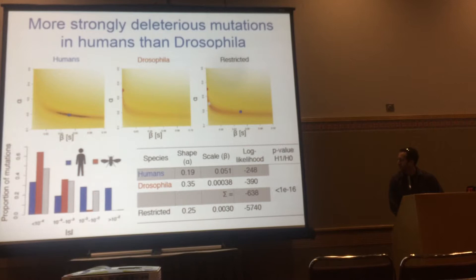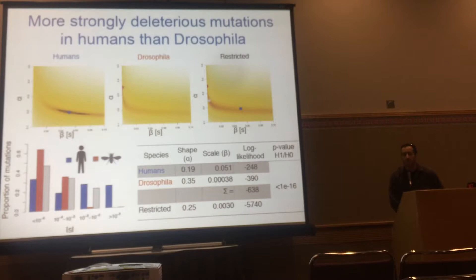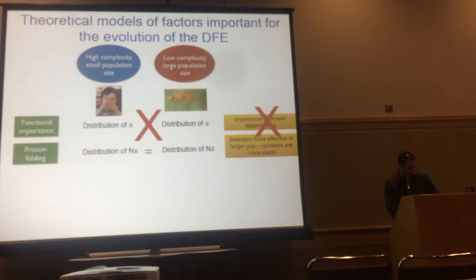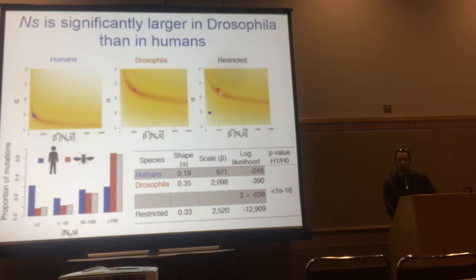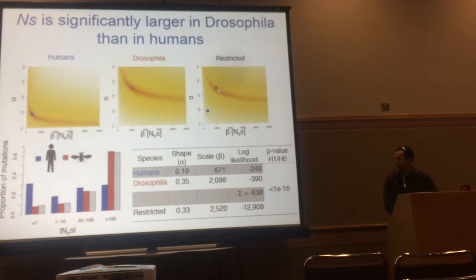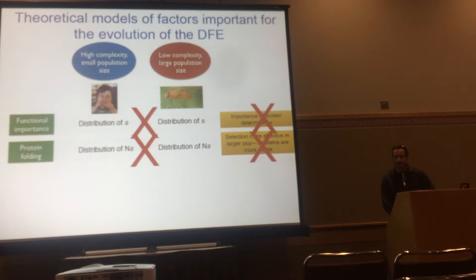So how do the DFEs differ? Humans, shown in blue, have a higher proportion of more strongly deleterious mutations compared to Drosophila, shown in red. This allows us to reject the naive functional importance model, which predicts the DFE should be the same between species. Turning to the protein folding model, we apply the same likelihood ratio test framework to test whether the distribution of NS differs — and again, the restricted model has a substantially worse log-likelihood, with NS inferred to be larger in Drosophila than in humans.